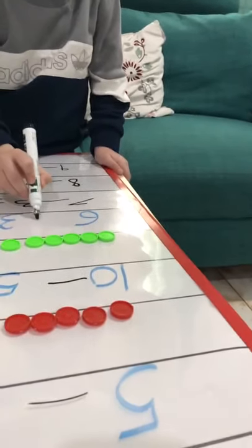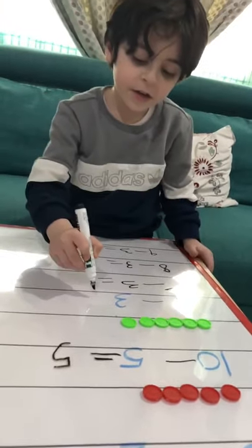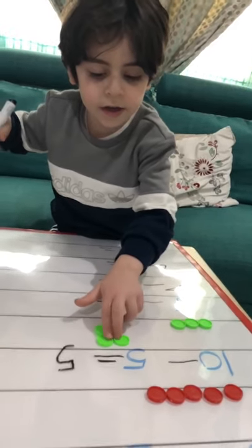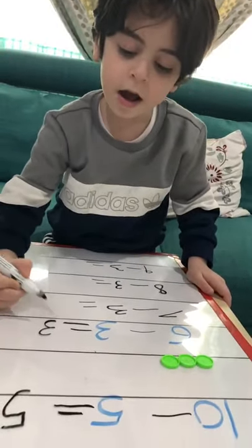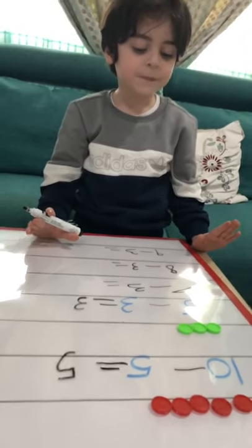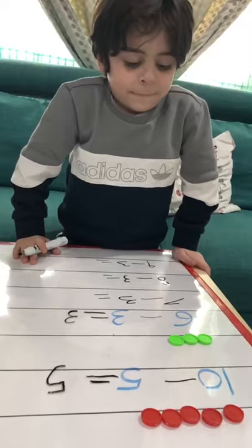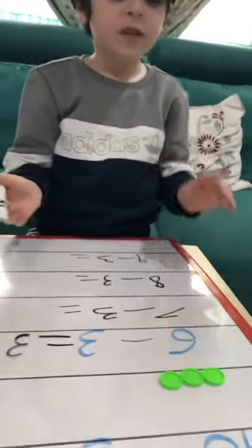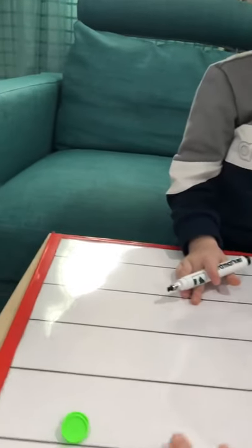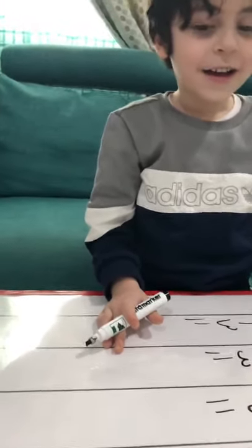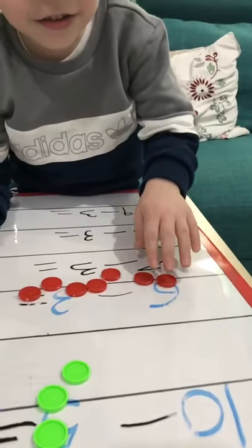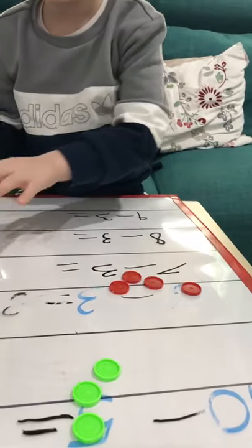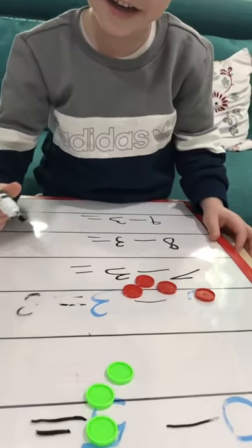3 minus 6 minus 3 equal. I take away three and will be three. Okay, now no wait, and now seven minus three equal one, that's five. I take away three.